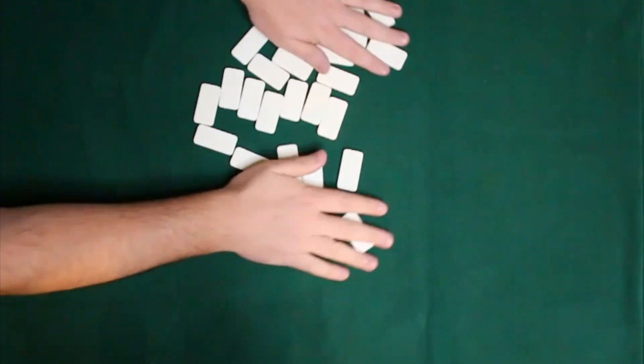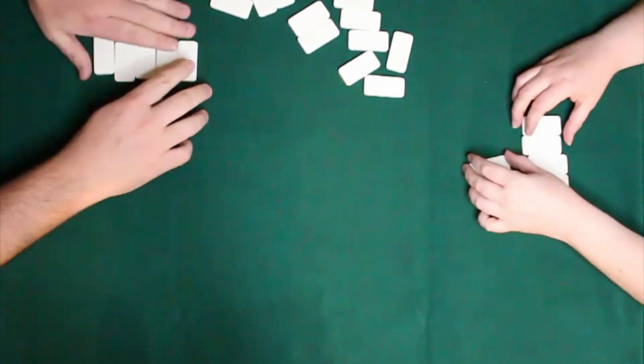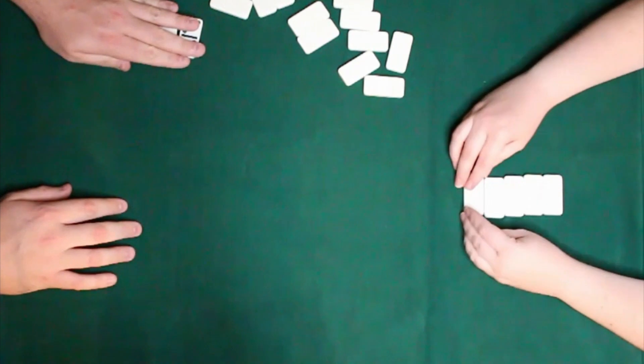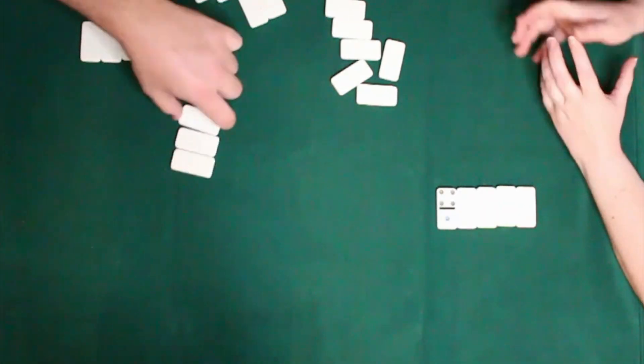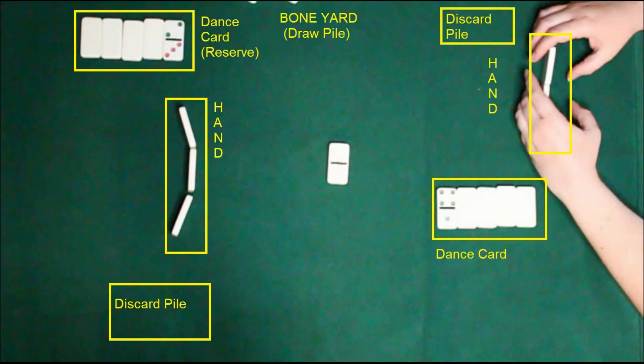You're going to have a reserve that you're trying to get rid of and everything else is somewhat secondary. So I'll go ahead and deal out five dominoes to each player and you'll turn the top one up. We'll keep them all face down then deal each player three dominoes that will be known as your hand. Your reserve will be known as your dance card and you'll also have a discard pile.